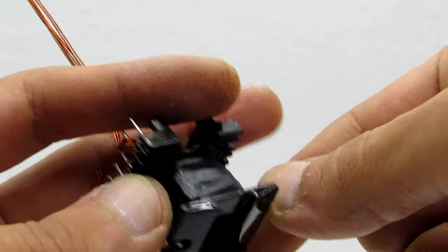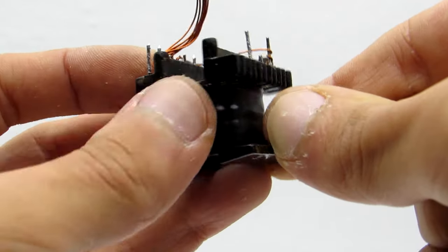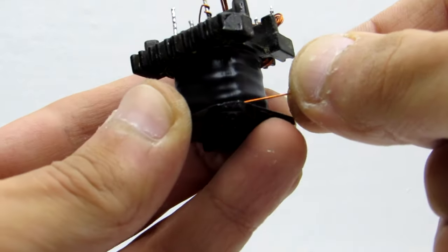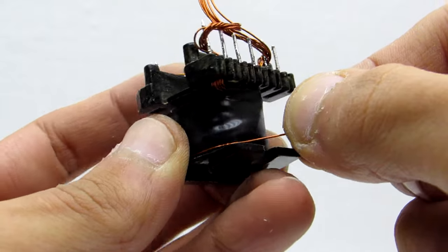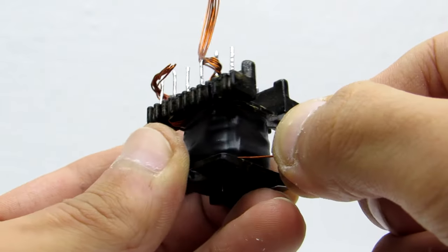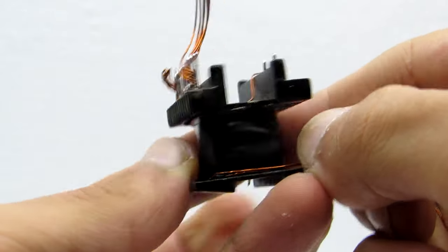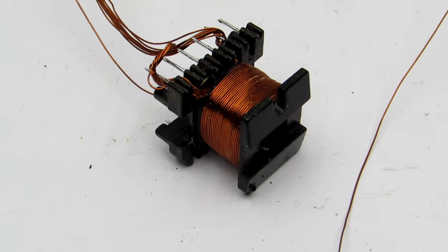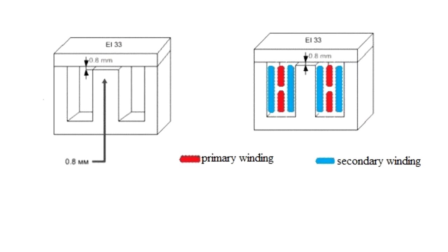Then wound the second part of the secondary winding. Insulate it and pull out the end of the wire. Thus, the primary winding is in the middle. On both sides it is surrounded by the secondary winding.